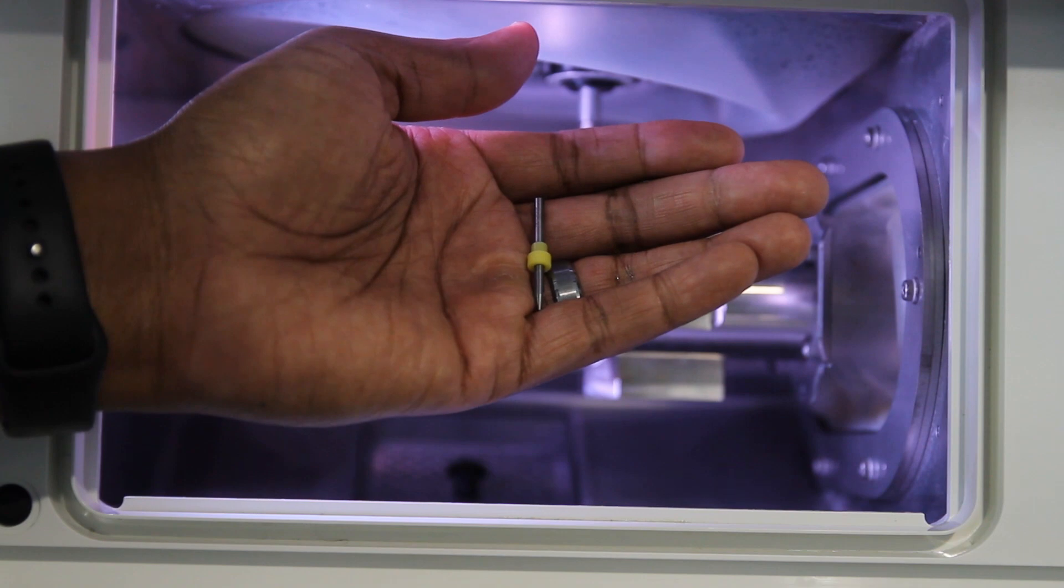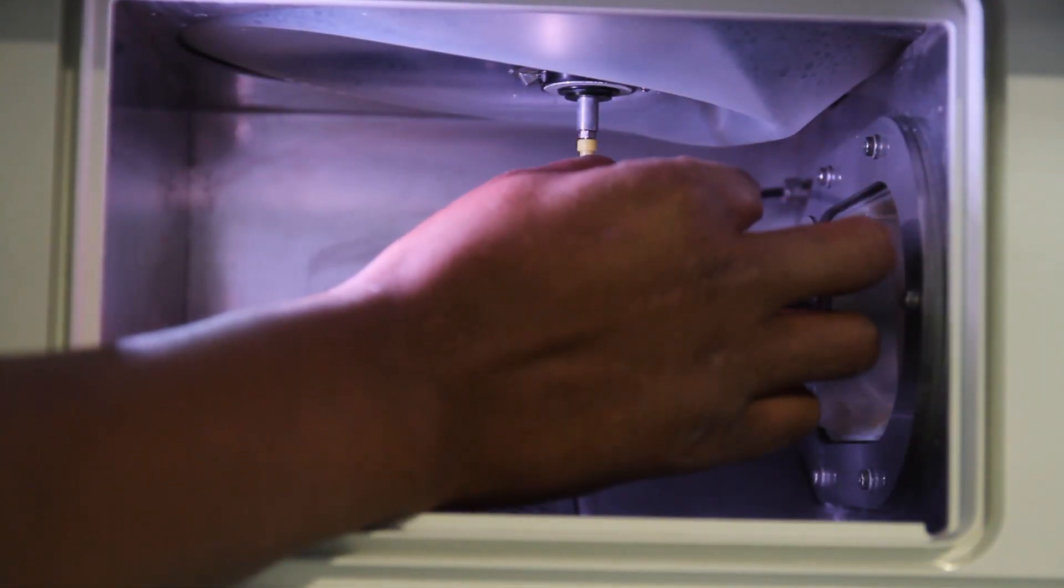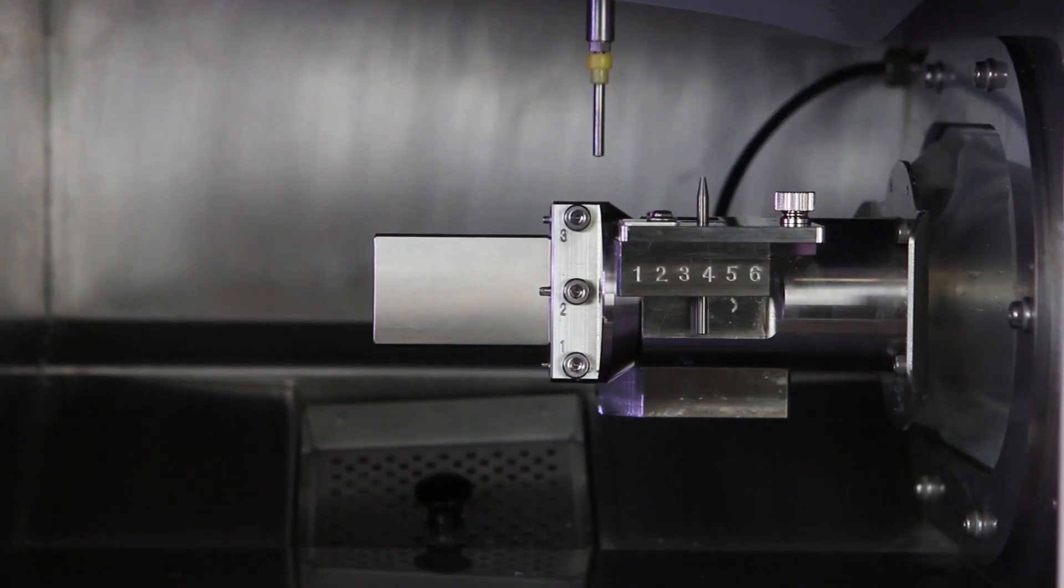Next, insert the detection pin into the open slot on the ATC magazine correction jig. Close the front cover.